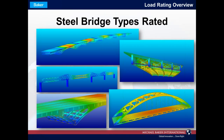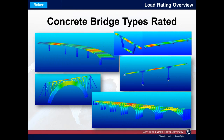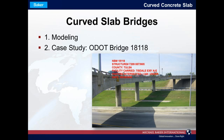In terms of steel bridge types rated, we've done deck trusses, through trusses, delta frame bridges, curved and skewed steel girders, and tied arch bridges — all modeled with MIDAS Civil. For concrete bridges, this procedure works equally well for curved reinforced concrete slabs, post-tension segmental box girders, concrete rigid frames, open spandrel post-tensioned arches such as the Fulton Road bridge in Cleveland, and earth-filled reinforced concrete arches. It is a very versatile procedure.